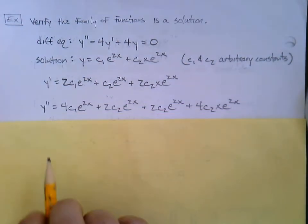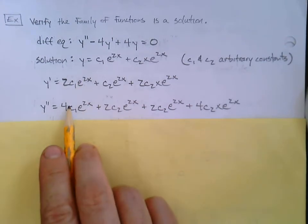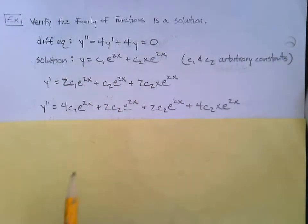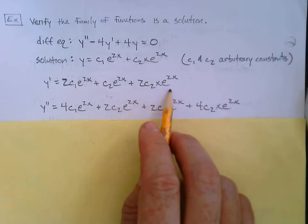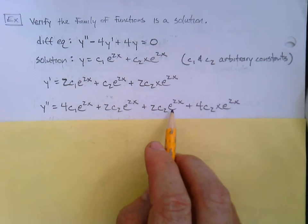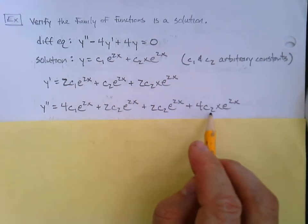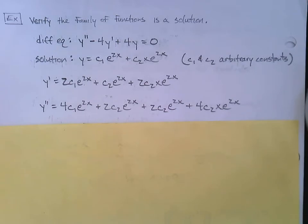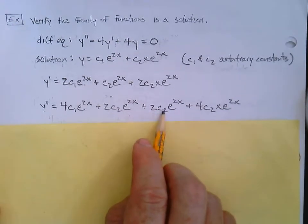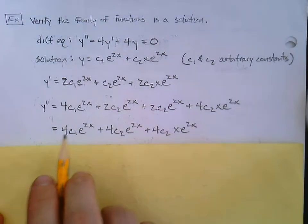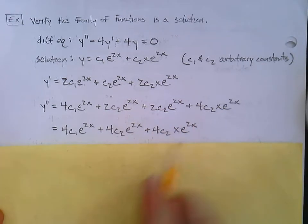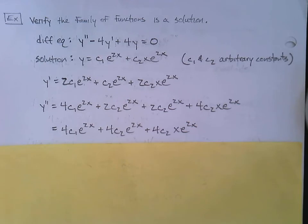We also need y double prime — it's just going to get bigger, no big deal. Bring another 2 down: 4 c1 e to the 2x. The next derivative: 2 drops down giving 2 c2 e to the 2x. For the last part we've got another product rule: 2 c2 e to the 2x plus 4 c2 x e to the 2x. Those two middle terms are the same, so simplifying: y double prime equals 4 c1 e to the 2x plus 4 c2 e to the 2x plus 4 c2 x e to the 2x.